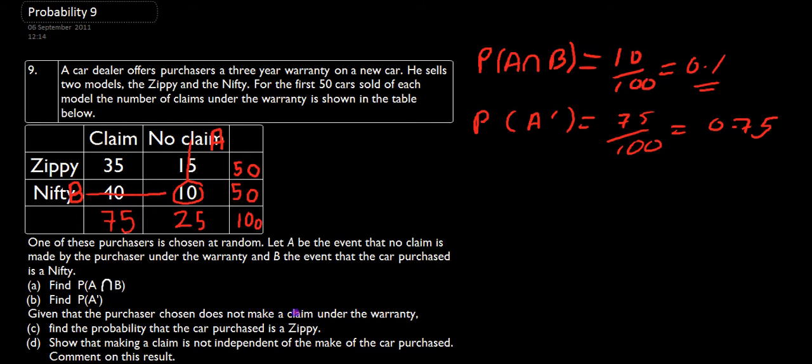Now, given a person chosen does not make a claim under the warranty, so we know that he doesn't make a claim. So what we're going to do, we're just going to examine, we know that no claim is made, so we're only interested in this section of data.